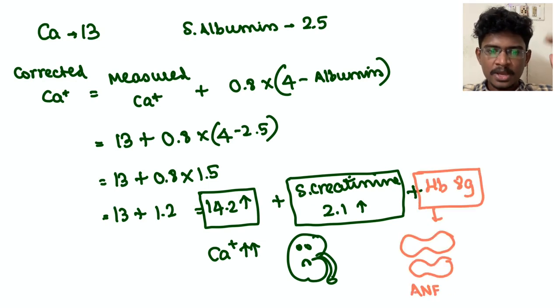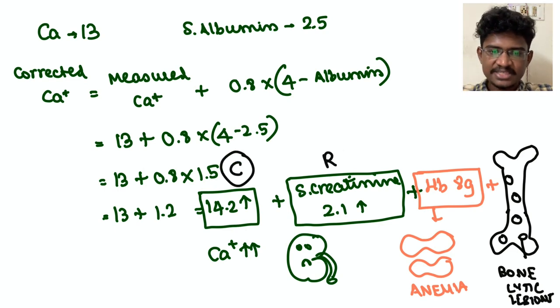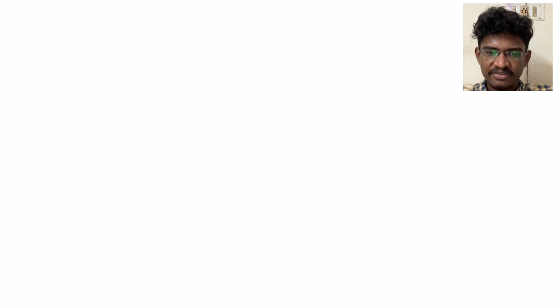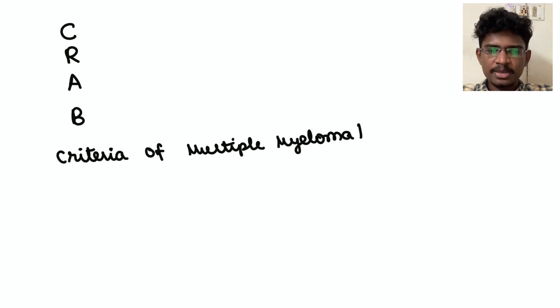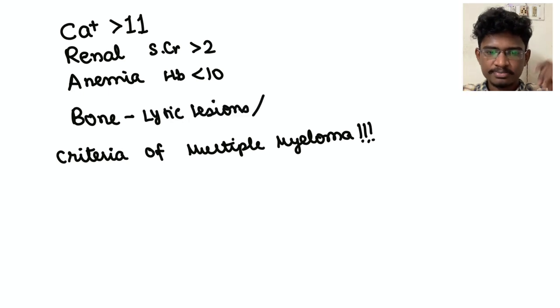Next, renal functions, KFT, serum creatinine more than 2.1. Next, anemia is there, hemoglobin 8. Next, osteolytic bone lesions are there. Nothing but the CRAB criteria of multiple myeloma: C for hypercalcemia, calcium levels more than 11. R for renal abnormalities, serum creatinine more than 2. A, anemia, hemoglobin less than 10. And B for multiple osteolytic lesions, or in the bone marrow if you see plasma cells. All these are diagnostic of multiple myeloma.